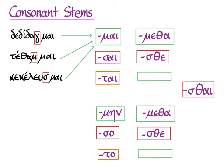Before you get too freaked out, remember — especially if you say your endings aloud — you'll always know what person and number you're looking at, since the -mai, -psai, -tai, and -metha will always be evident in the endings of the perfect, and the -main, -so, -to, and -metha will always be clear in the pluperfect. Even the second plural and infinitive forms will announce themselves, since those thetas will not go away.